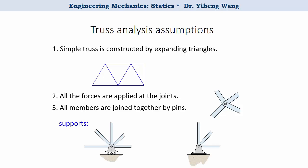The one on the left is a roller pin support, which only exerts one support force that is perpendicular to the contacting surface. And the one on the right is a fixed pin support, which exerts two support force components, one horizontal and one vertical.